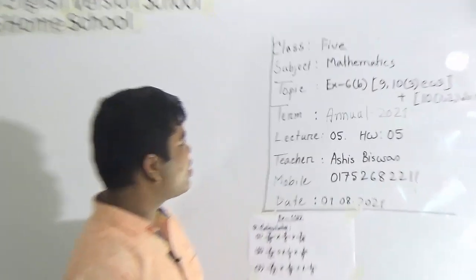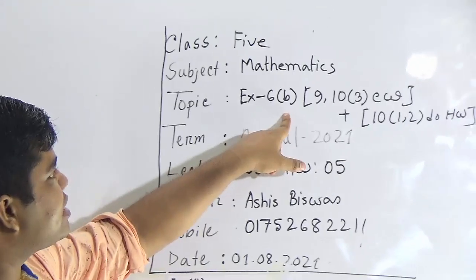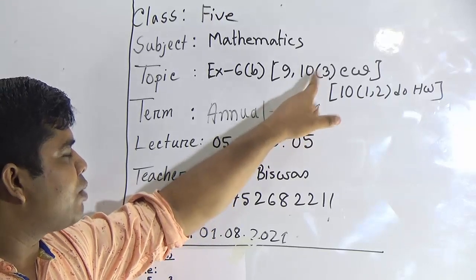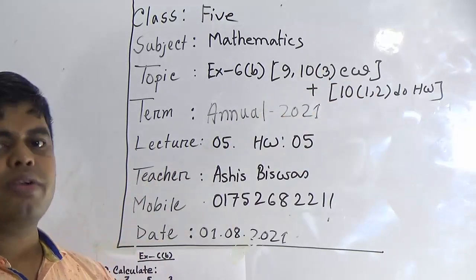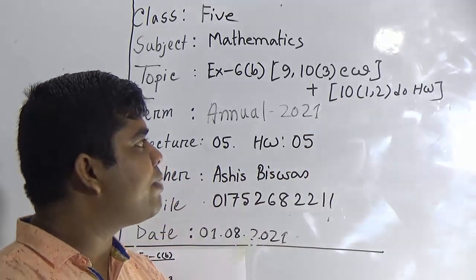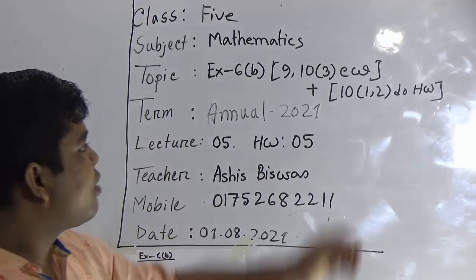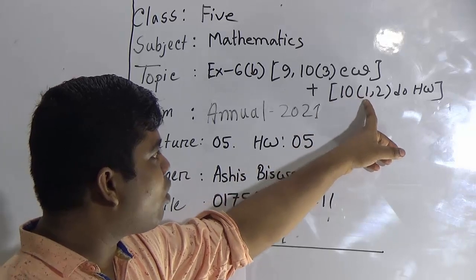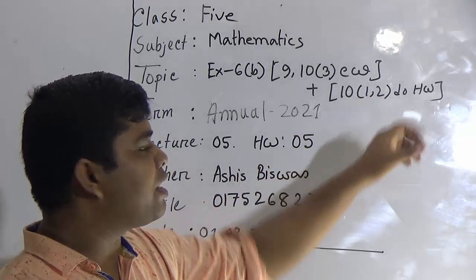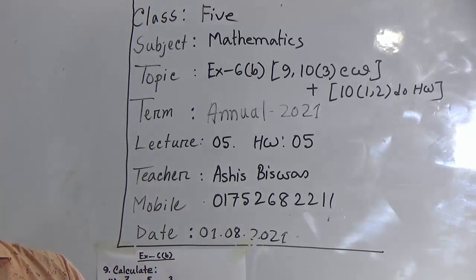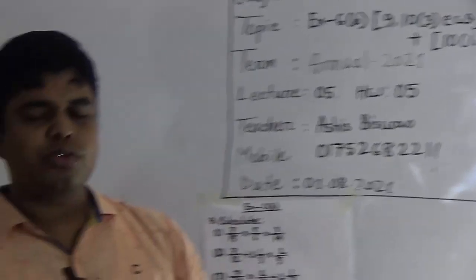My dear students, our today's topic is Exercise 6B. From Exercise 6B, we shall solve question number 9 and 10. From question 10, we shall solve problem number 3 as your CW. And from question 10, sub-numbers 1 and 2 will be your SW. You have to do your assigned SW — you need an SW copy and submit it regularly at our school campus every Saturday within 9 a.m. to 3 p.m.